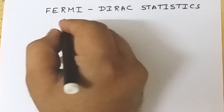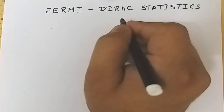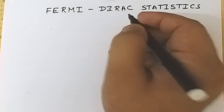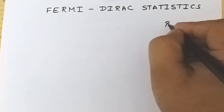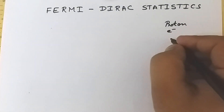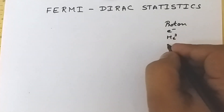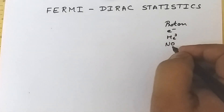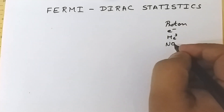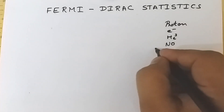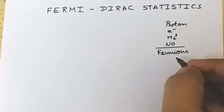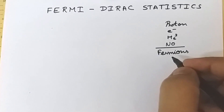Welcome. Today we are going to discuss Fermi-Dirac statistics. Fermi-Dirac statistics is followed by particles having half-integral spin — particles like protons, electrons, helium-3, and nitrous oxide. These are some examples of particles and molecules which have half-integral spin, and these particles obey Fermi-Dirac statistics. Hence they are known as fermions.